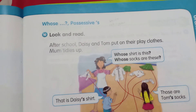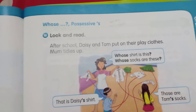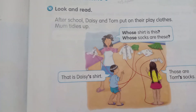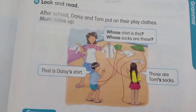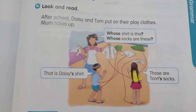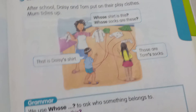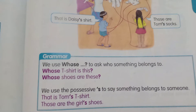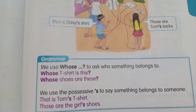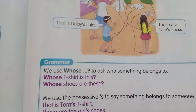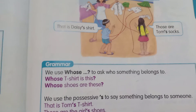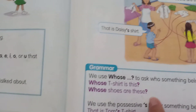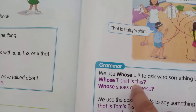Whose shirt is this? Those are Daisy's shirts. And whose socks are these? Those are Tom's socks. For the grammar, we use 'whose' to ask who something belongs to. For example: whose t-shirt is this? And whose shoes are these?